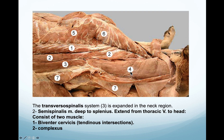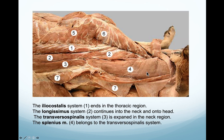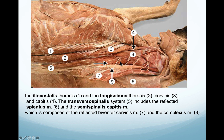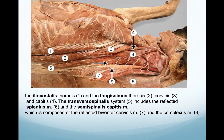If we reflect those muscles we will see the semispinalis muscle, which consists of two portions: the biventer muscle and the complexus. The semispinalis is almost divided into short segments, with white lines marking the areas of tendon - these are called tendinous intersections.